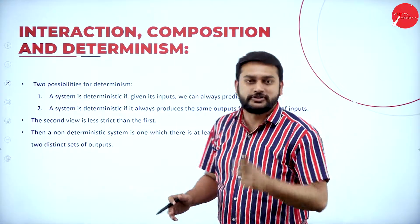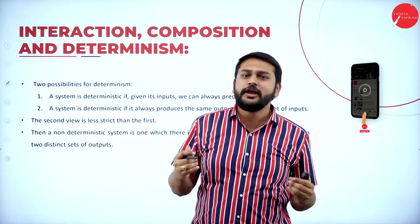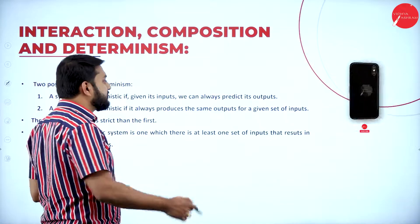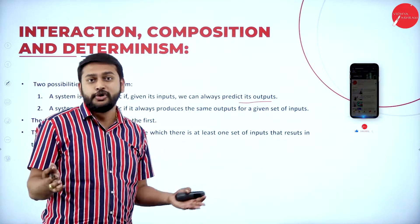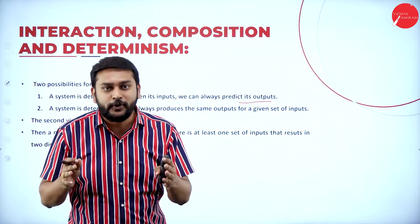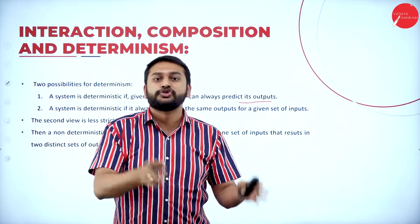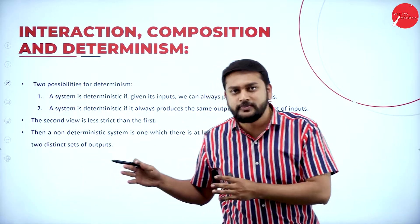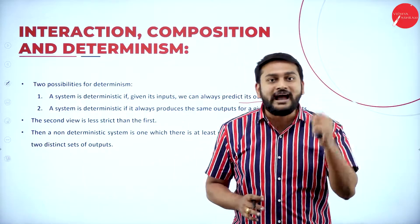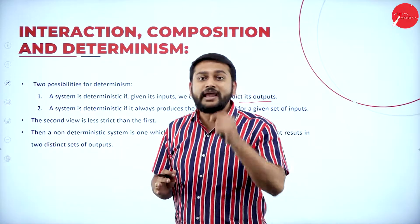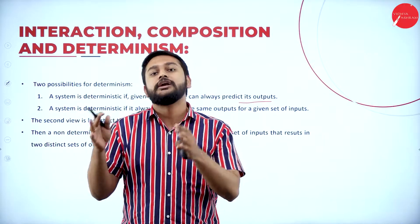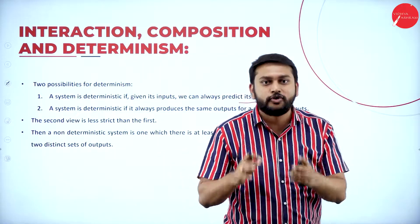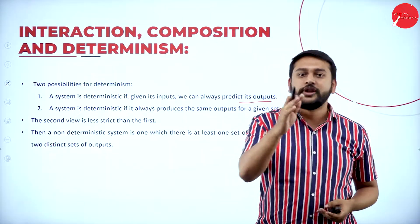When it comes to determinism, I have two possibilities. The first possibility: when I know the input, can I predict the output? Yes, obviously you can predict the output. The second possibility: for a set of inputs, will I get the same output? Yes. Those are the two possibilities of determinism. Non-determinism is when I cannot predict the output — even if I am not able to predict one possibility, I conclude that as non-determinism.